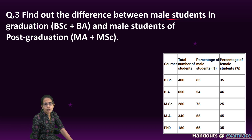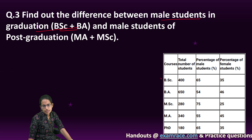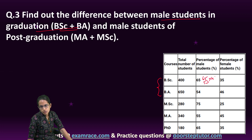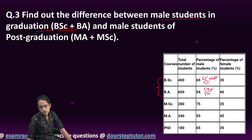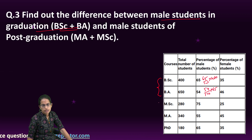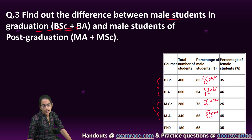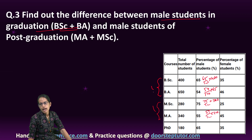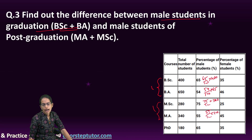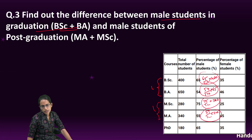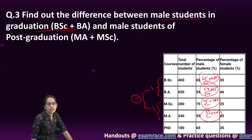The next is the difference between the male students in graduation (BSc) and MSc. So 65 by 100 into 400, 54 by 100 into 650 for graduation male students; and for post-graduation male students: 75 by 100 into 280 and 55 by 100 into 340. I find each value, add the graduation set, add the post-graduation set, then take the difference between the two. That would be the answer.